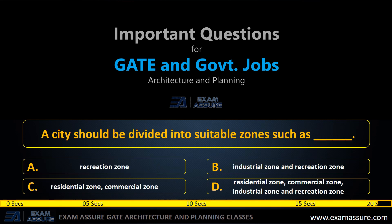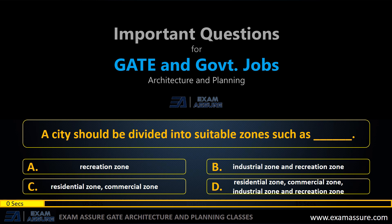Next question. A city should be divided into suitable zones such as — Option A: Recreational zone. Option B: Industrial and recreational zone. Option C: Residential zone and commercial zone. Option D: Residential zone, commercial zone, industrial zone, and recreational zone. The correct answer is Option D.